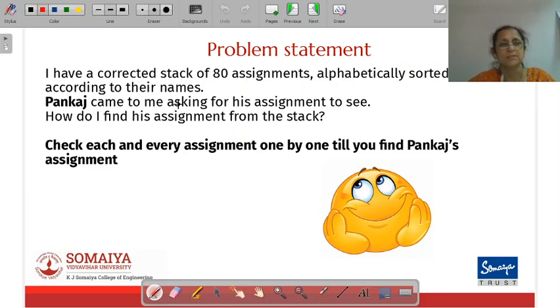The problem is like this: I have a stack of corrected AT assignments which are alphabetically sorted and a student named Pankaj comes to me because he wants to see his assignment. Now how do I find the assignment from the stack? Normally I will check each and every assignment, check his number, check the name on the assignment and I will go on doing it till I find Pankaj's assignment.